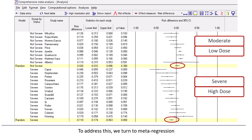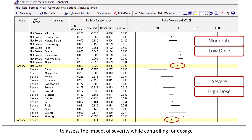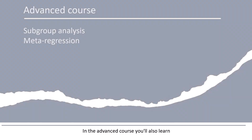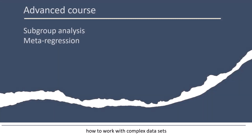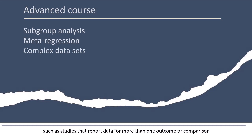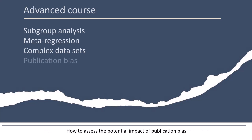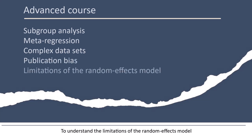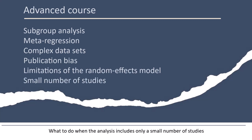To address this, we turn to metaregression. We may be able to use metaregression to assess the impact of severity while controlling for dosage. In the advanced course, you'll also learn how to work with complex datasets such as studies that report data for more than one outcome or comparison, how to assess the potential impact of publication bias, how to understand the limitations of the random effects model, what to do when the analysis includes only a small number of studies, and how to avoid common mistakes related to these issues.